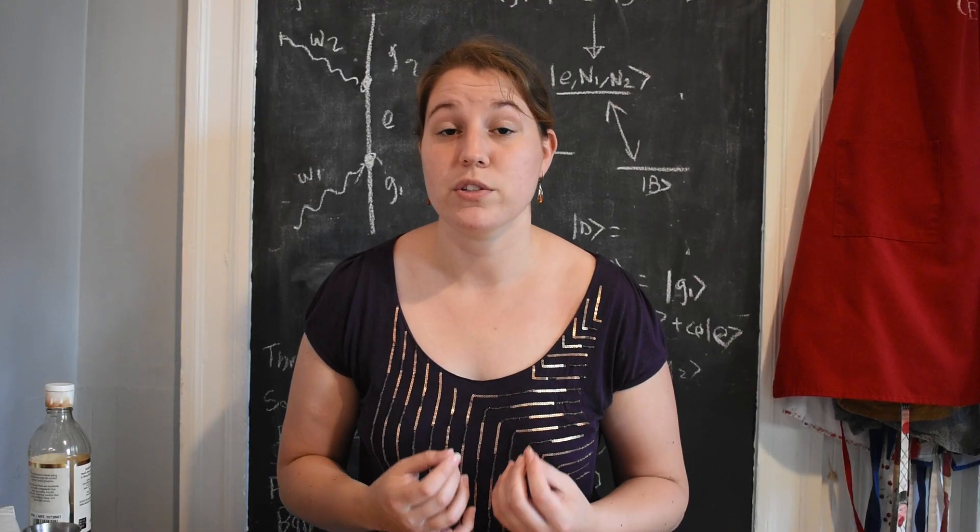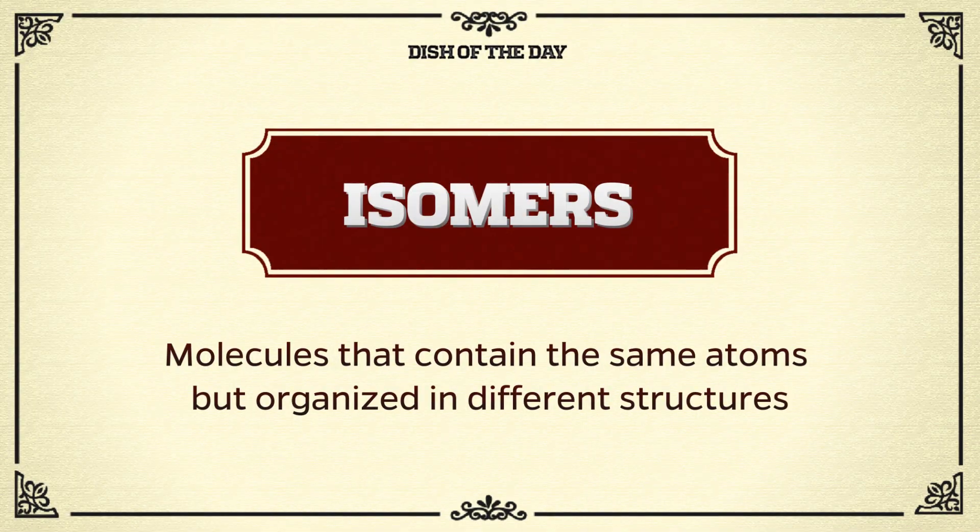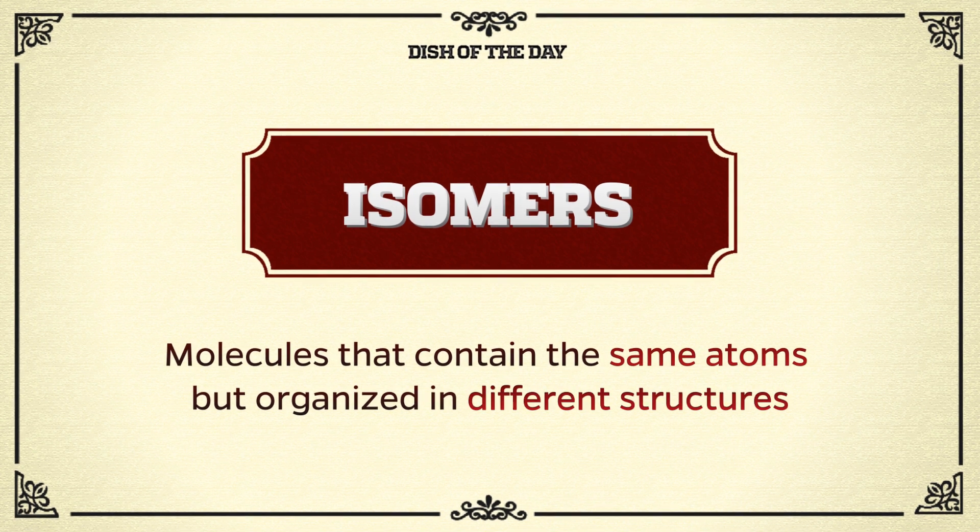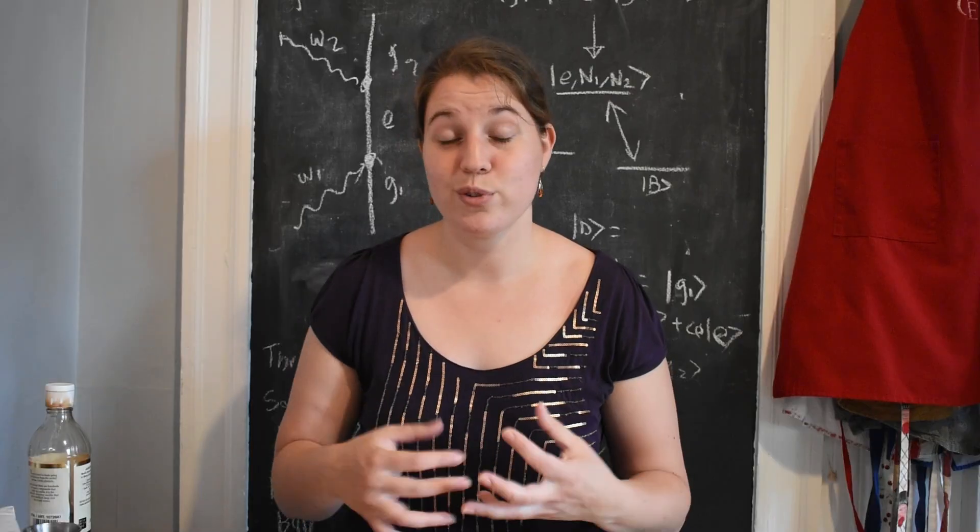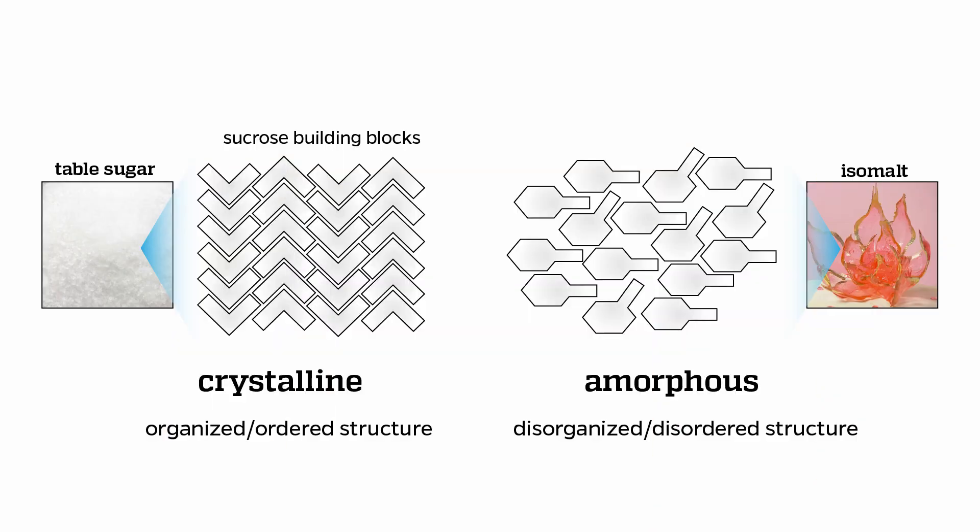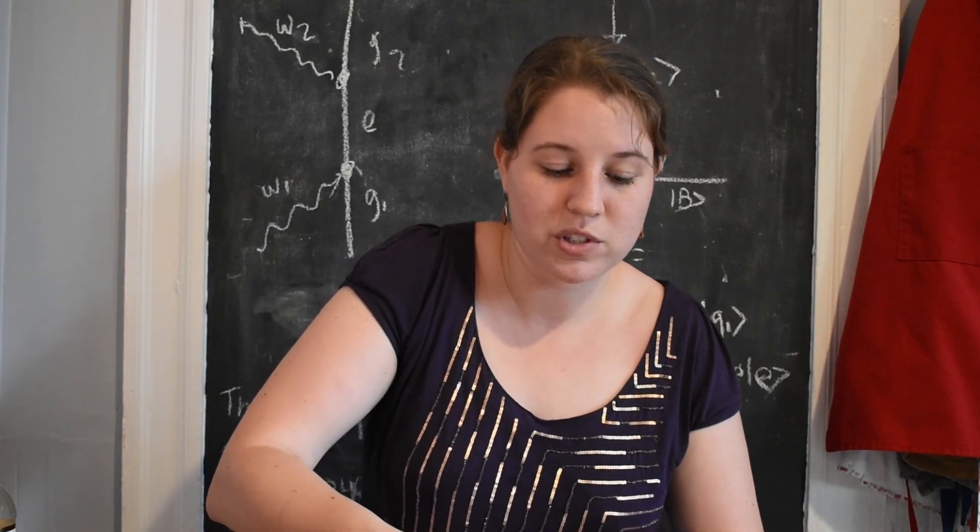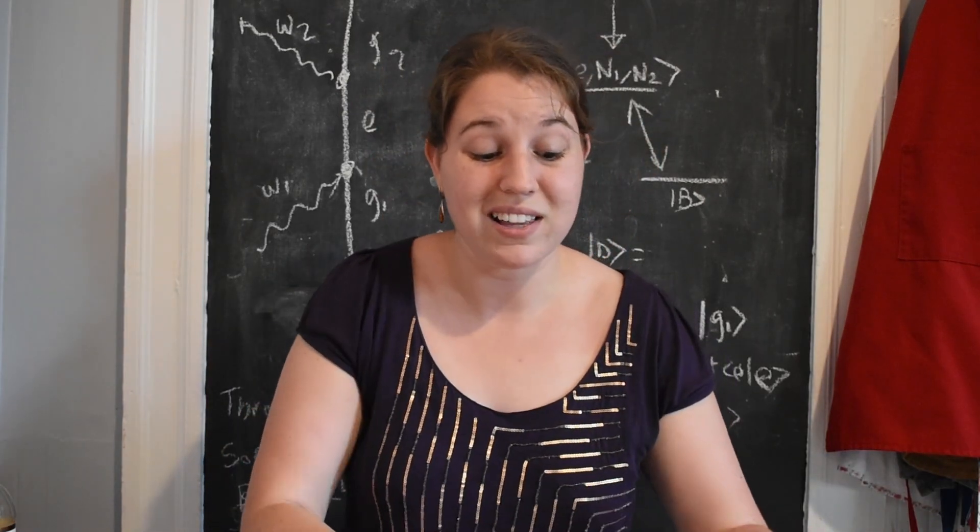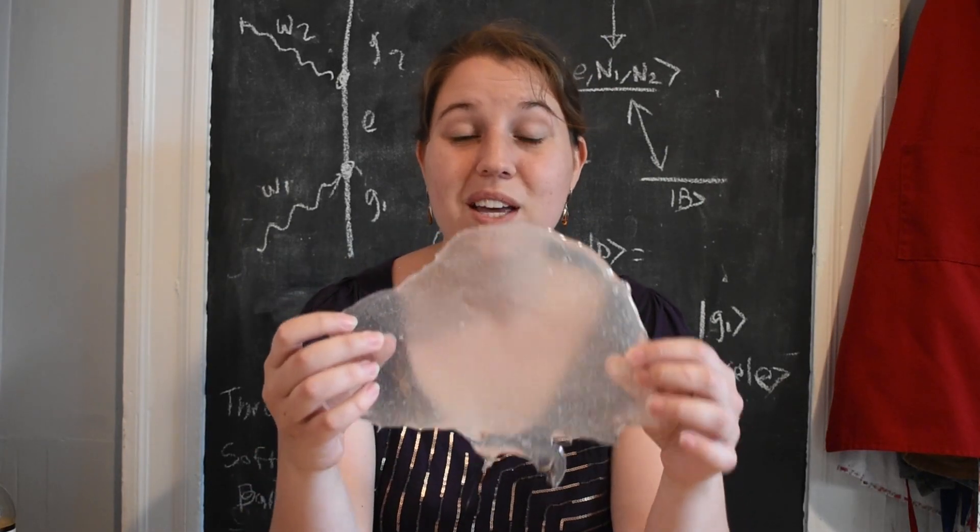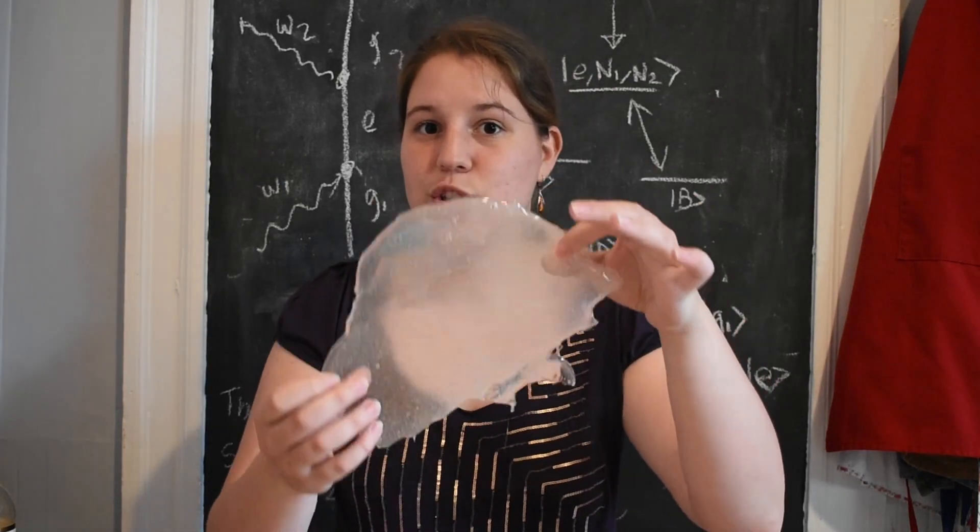These different building blocks of sugar are called isomers, meaning they're made up of the same atoms but organized in different structures. Introducing different isomers into our isomalt sugar means that when the building blocks can't find the way to fit together they're blocked from forming an organized crystal structure and instead stay in a disorganized amorphous state. This leads us to having isomalt solids that actually look a lot like the glass you're used to seeing. You can see that it's a shiny clear structure.